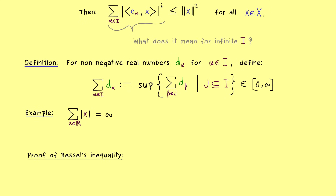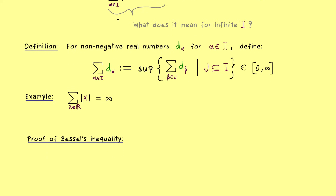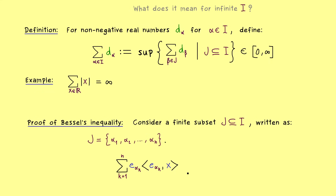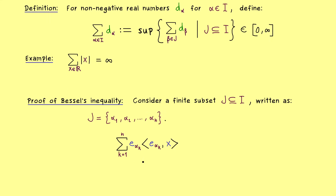Now let's prove that. We consider an arbitrary finite subset of our index set I, and at the end we pass to the supremum. To keep it simple, we enumerate this finite subset with indices α_1, α_2, and so on. This looks very similar to what we did at the beginning of the video. We use the same construction, projecting separately onto each direction, to form the orthogonal projection. And x minus this orthogonal projection gives the normal component.